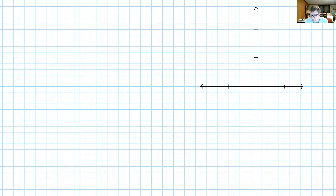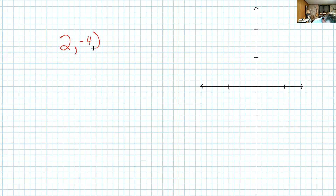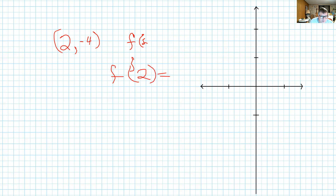Tonight you're going to look at section 8.3, and it's all about reading graphs. Don't forget: if you have an ordered pair like 2, negative 4, that's the same thing as saying f of 2 equals negative 4. I will be back at 1:15.